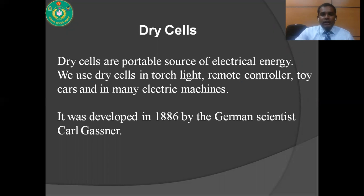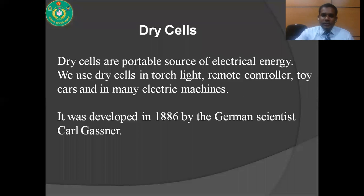Now I am going to discuss about the dry cell. What is a dry cell? A dry cell is a portable source of electrical energy. We use dry cells in torchlight, remote controllers, toy cars, and in many electric machines. It was developed in 1886 by the German scientist Karl Gessner.